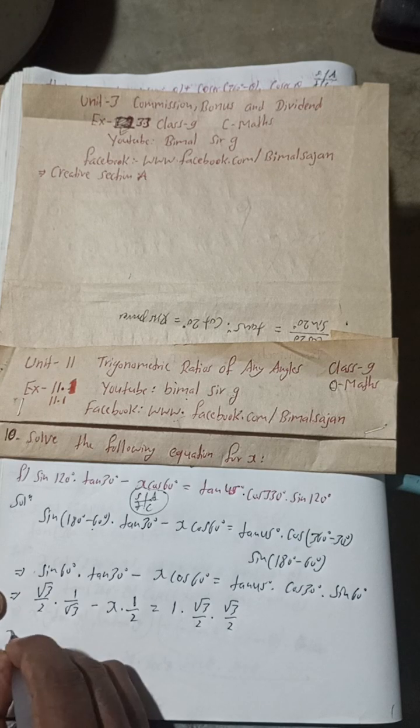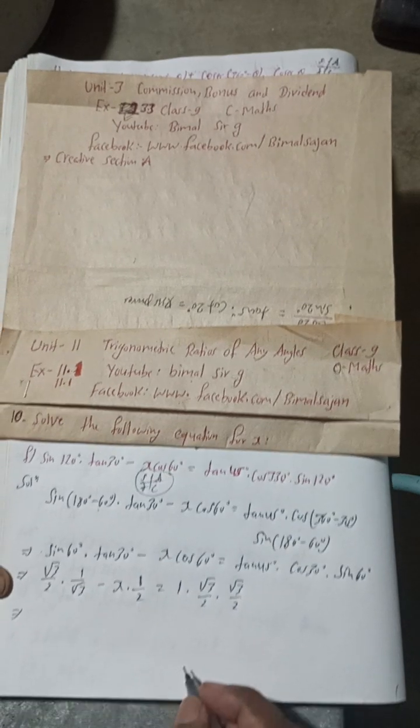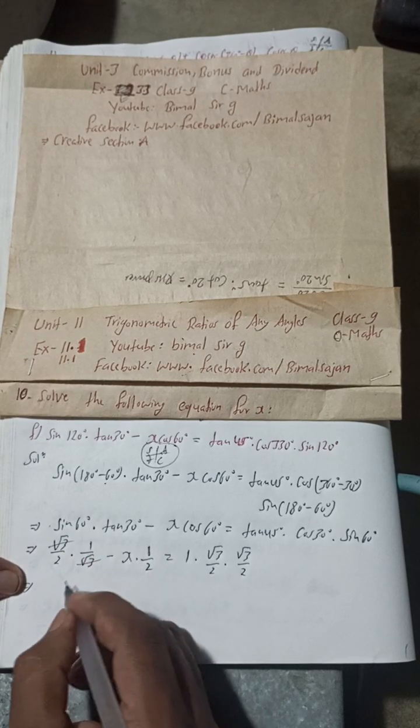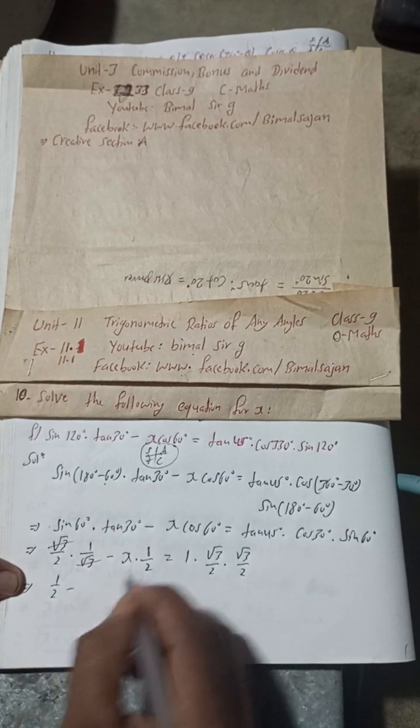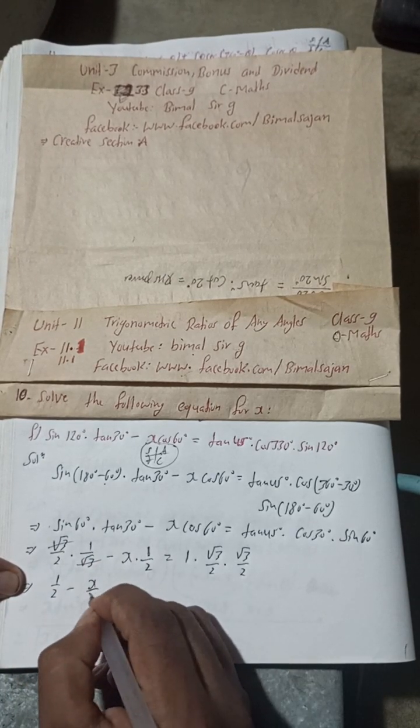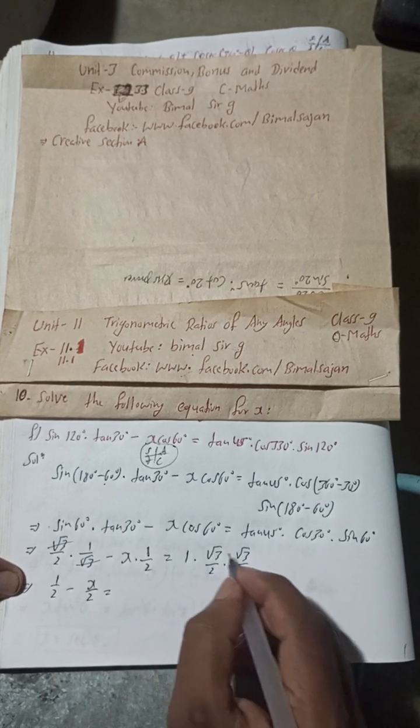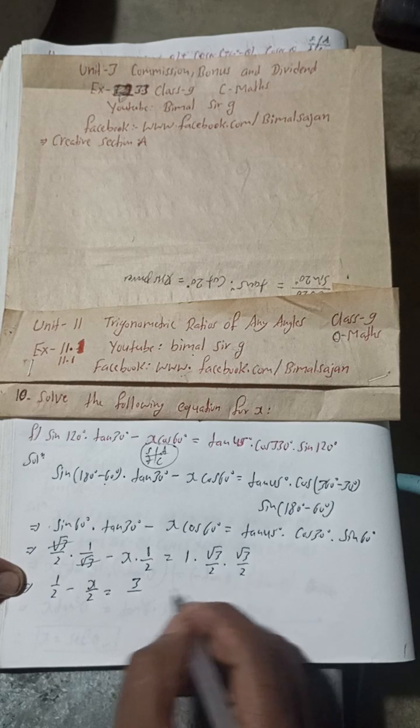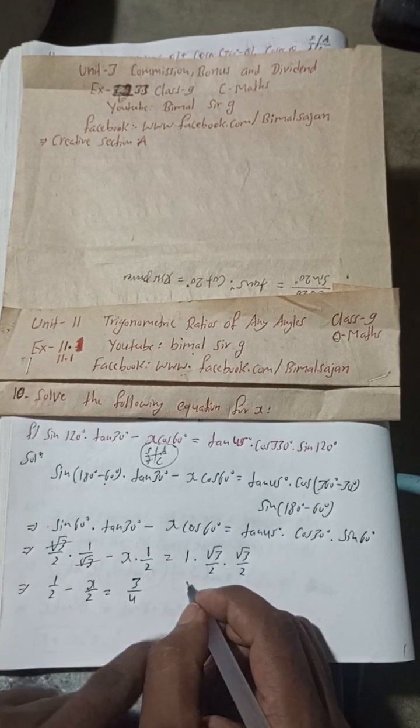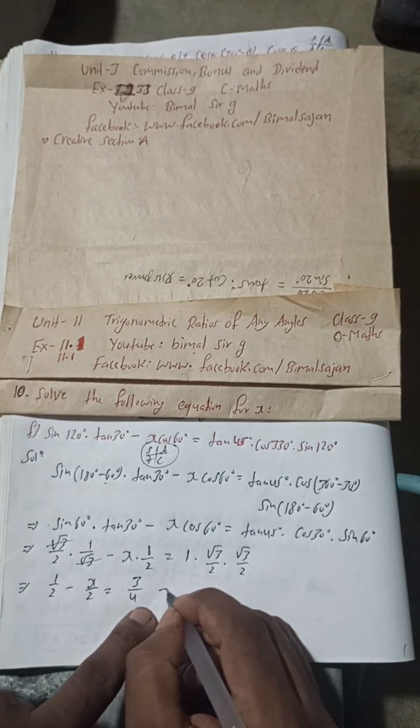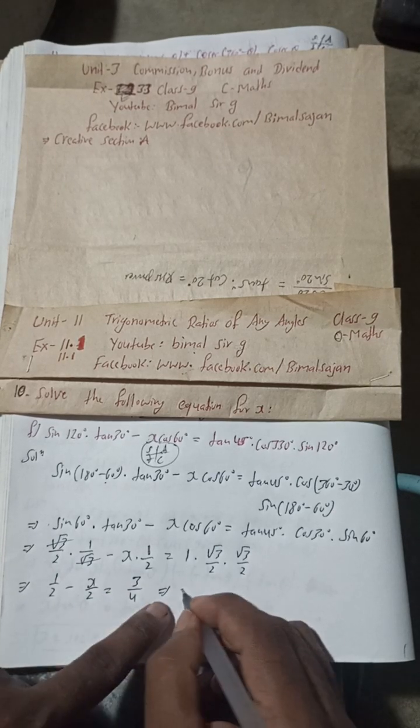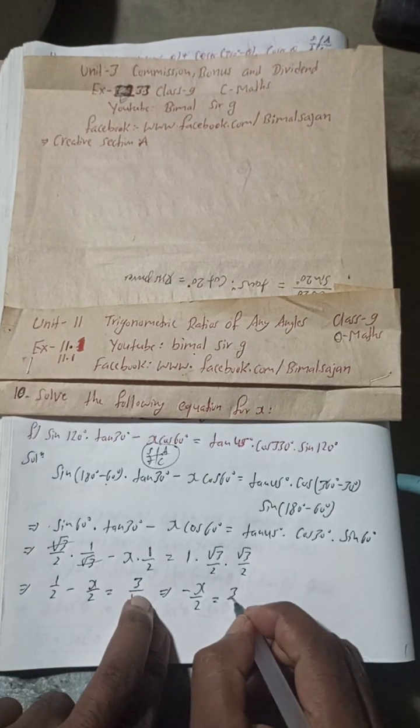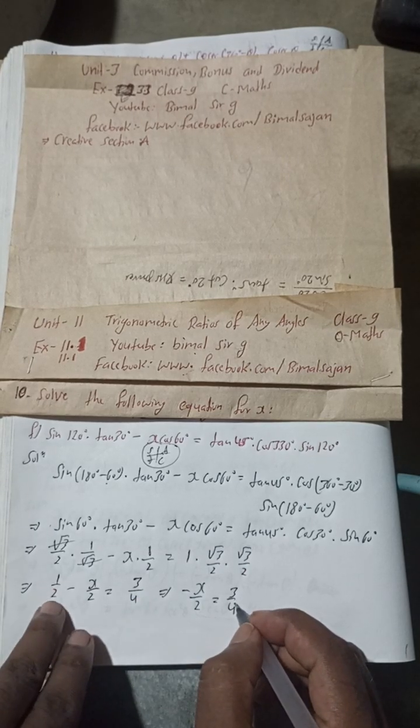This implies here root 3 root 3 cancel, this is 1 by 2, 1 by 2 minus this is x by 2 is equal to root 3 root 3 is 3, root 3 square is 3 only, and 2 to 4. Now put this minus x by 2 in the same side, is equal to 3 by 4 plus 1 by 2, so this will be minus 1 by 2.